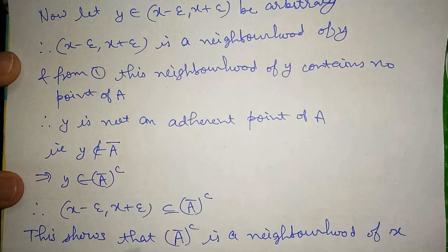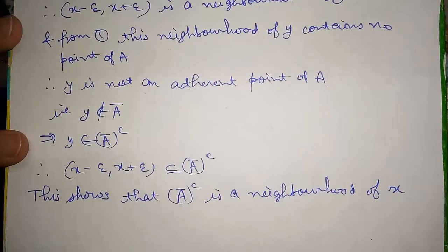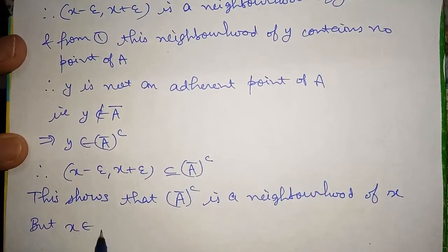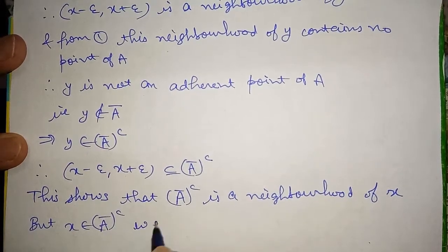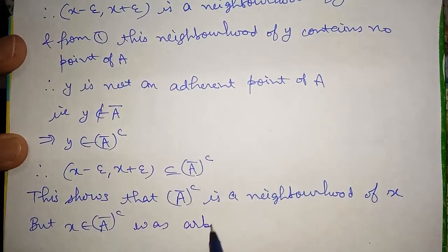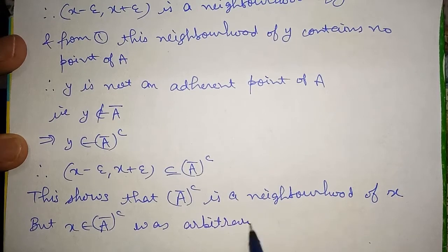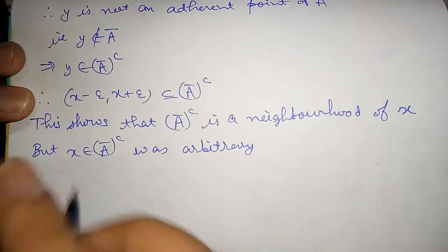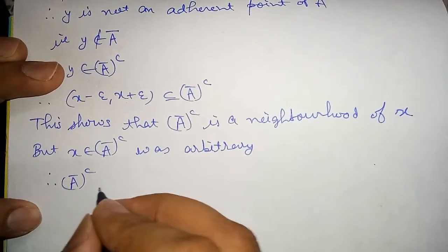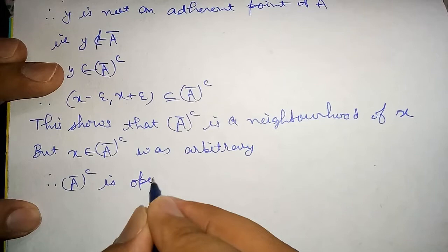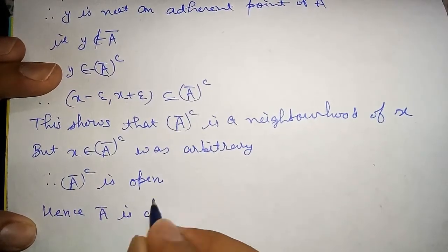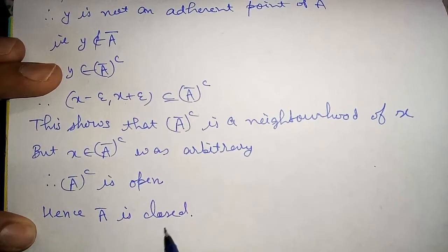Since X in the complement of A-bar was arbitrary and every such X has a neighborhood contained in the complement, the complement of A-bar is open. Hence A-bar is a closed set.